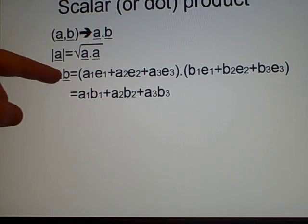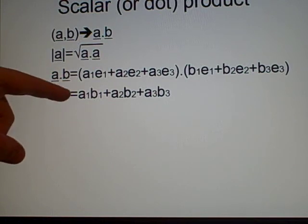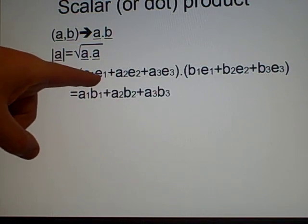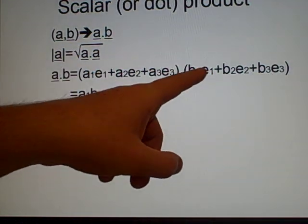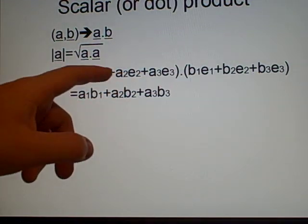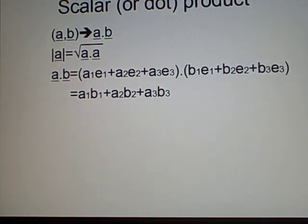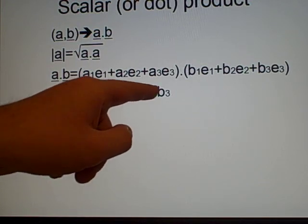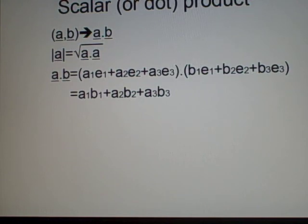And to find the dot product, so we've got a dot b here, we have a component, so we've got the components and the basis vectors here. The same for b, dotted together. And all you do is you collect the e1s, e2s, and e3s together, and you multiply all the different parts. We've got a1 b1 plus a2 b2 plus a3 b3. Pretty straightforward.